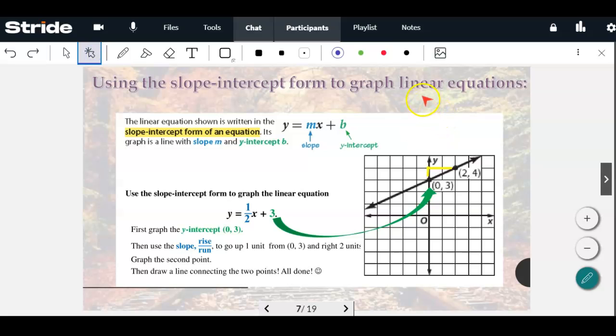Using the slope-intercept form to graph linear equations. If you have your equation, you can actually use the information from the equation to draw the line. You only have to have two points. Here's an equation for an example: y equals 1 half x plus 3. You start with this plus 3. That's where it crosses the y-axis. It's going to cross at 3. So that point is 0, 3. Once you have that point on the graph, then you use the slope to find the next point. 1 half means you rise up 1, run over 2. You have two points. Connect them. Draw the line.